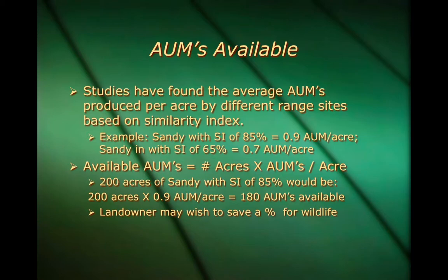For example, we could take 200 acres of sandy with a similarity index of 85%. You take 200 acres times 0.9 AUMs per acre, which gives you 180 AUMs available.